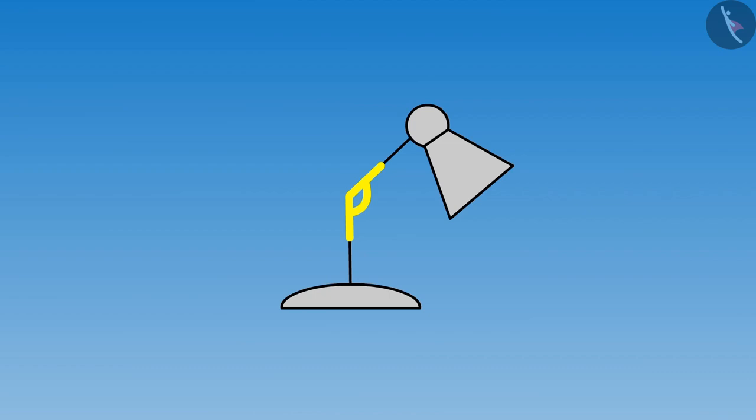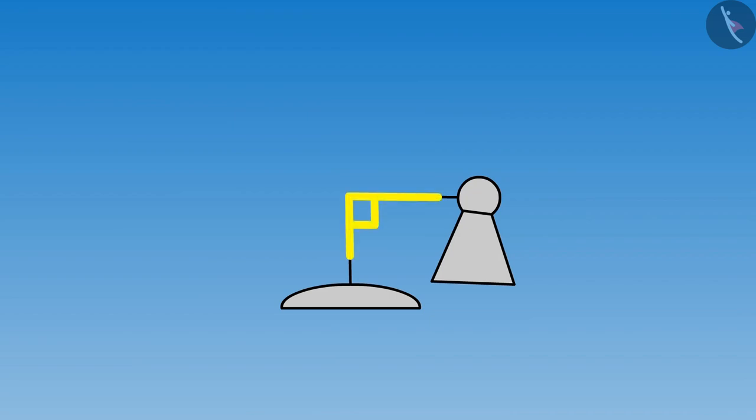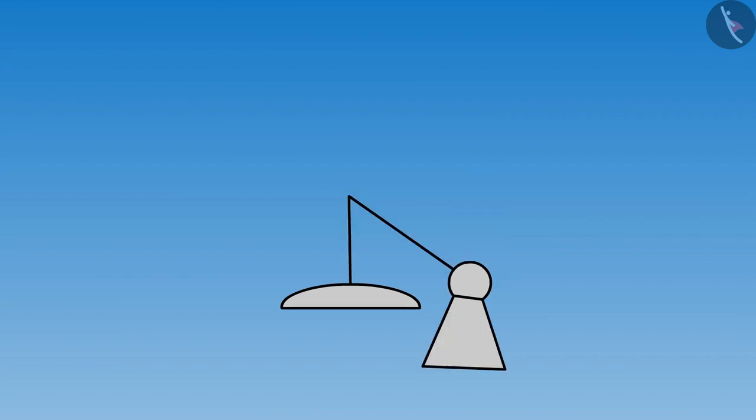Meena says, now look at the magic! She bends the handle of the lamp and asks, which angle is this? Riva says, hey, this looks like an L — that means it is a right angle! Meena asks, do you want to see the magic again? She bends the handle once more, and Riva gets surprised and says, this angle is less than a right angle!